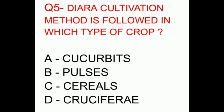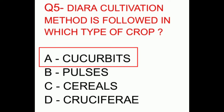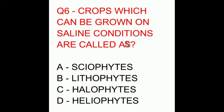Question number five: the Daira cultivation method is followed in which type of crop? The options are cucurbits, pulses, cereals, or crucifers. The correct answer is cucurbits.